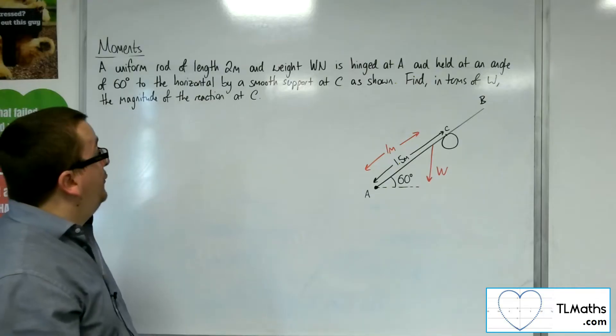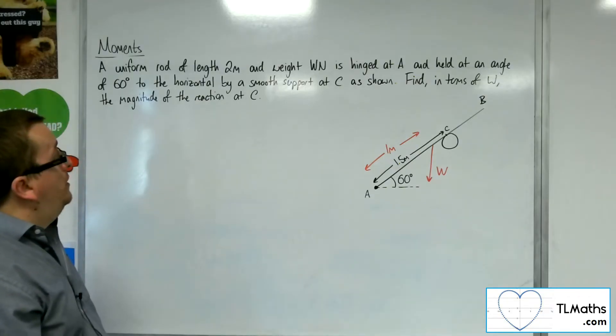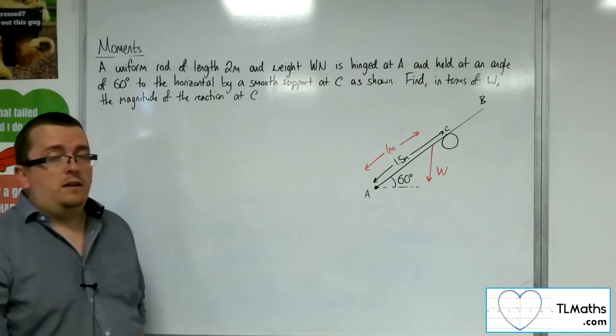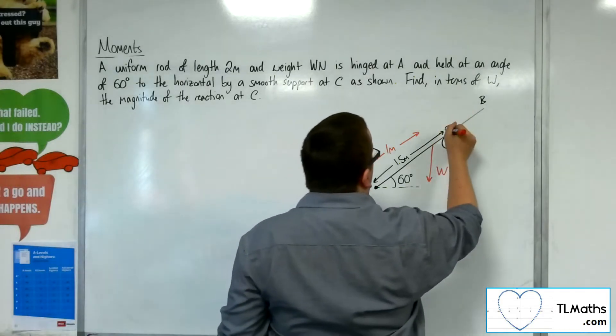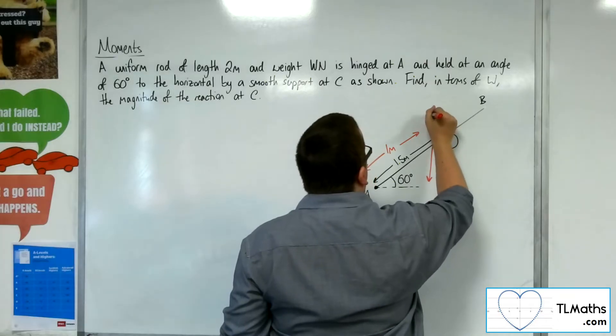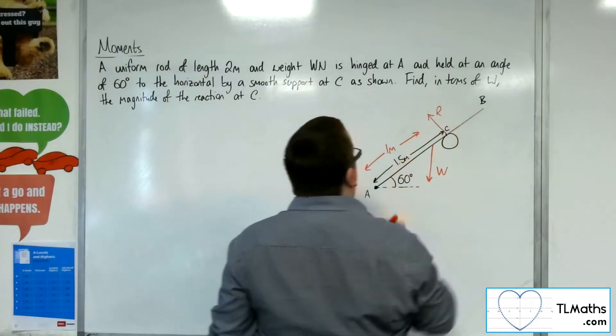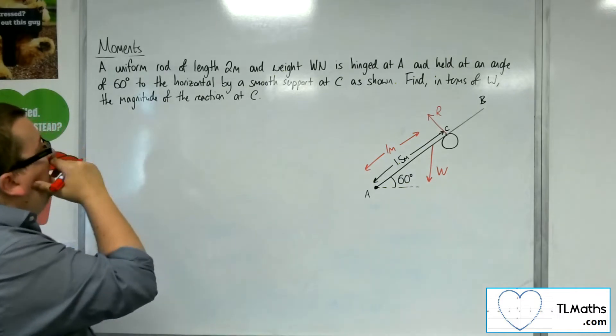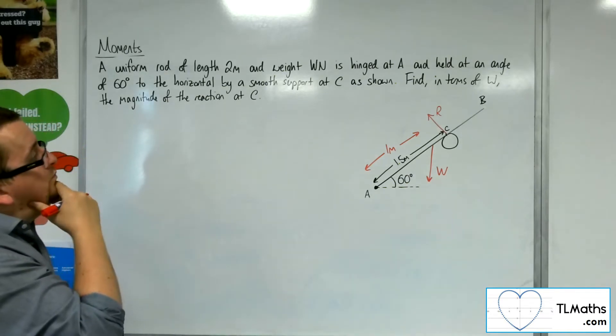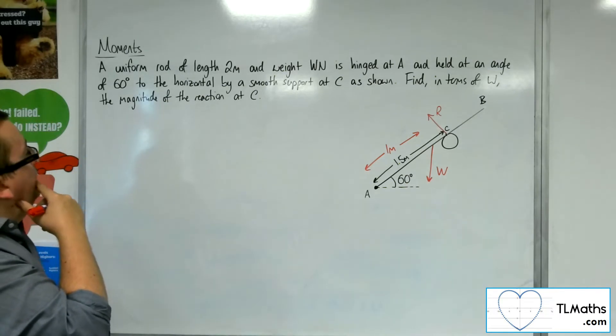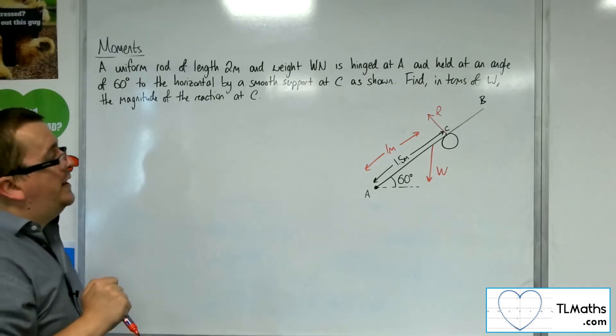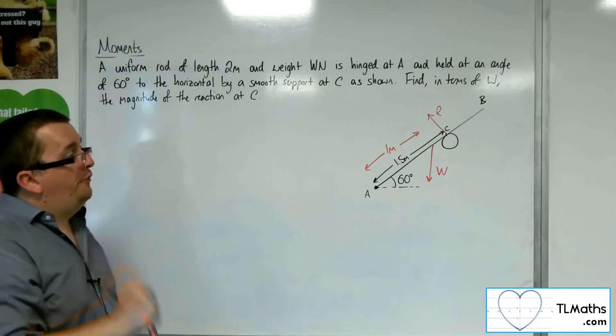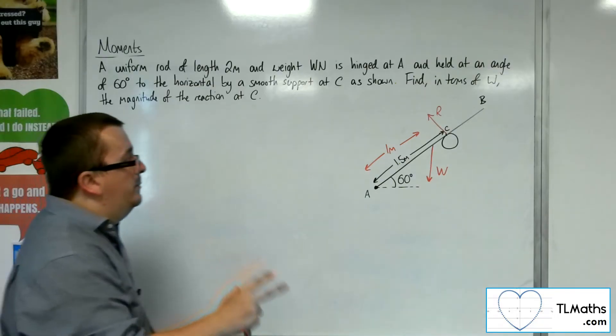We know also that there's no friction at C on that smooth support, but there will be a normal reaction force R, which I'm going to need to know about. So find in terms of W the magnitude of the reaction at C. So it's the R that we want to find here, in terms of W.